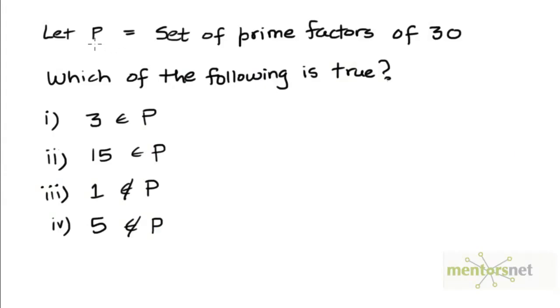Here's a problem. Suppose we define P to be a set of all the prime factors of 30. Which of the following is true?